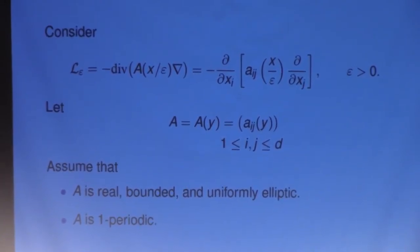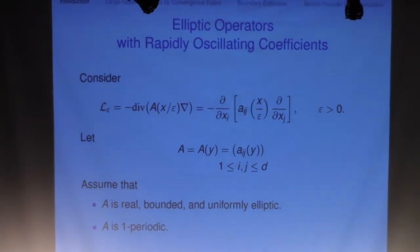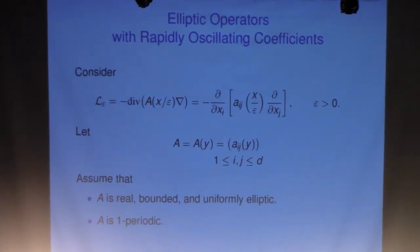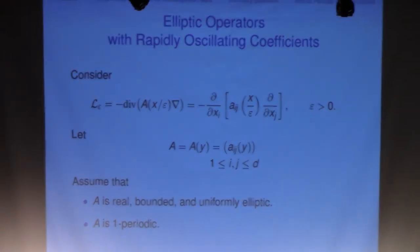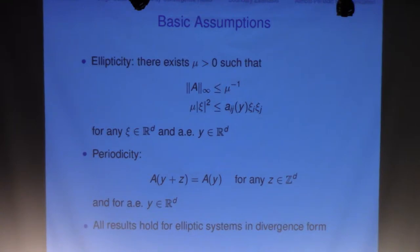The setup is the same. We're working with a family of second-order elliptic operators in divergence form with a parameter epsilon, assuming the coefficient is real, bounded, measurable, and uniformly elliptic. Also, A is one-periodic. Precisely, we assume the matrix is bounded, positively definite, and periodic with respect to the integer lattice. We're working with the scalar equation, but all theorems and proofs extend directly to second-order systems in divergence form.